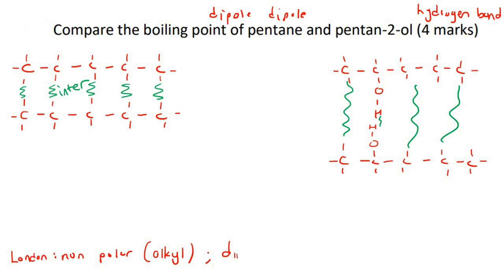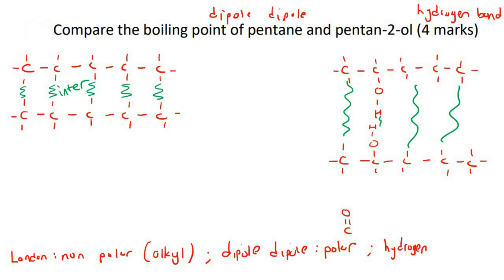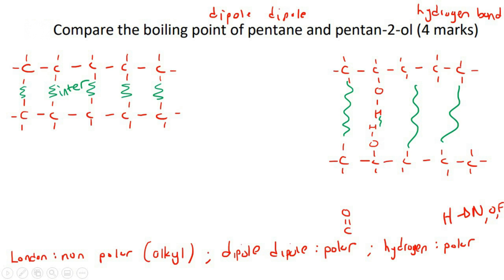Then you get the dipole-dipole part. That's always by a polar part of the molecule - for example, like a carbon double bond oxygen. And then hydrogen bonding is also polar, but it's just a special type of polar when you've got hydrogen bonded with nitrogen, oxygen, or fluorine. Dipole-dipole and hydrogen bonding are the same type of thing, but hydrogen bonding just has its own unique name because it's a bit stronger.